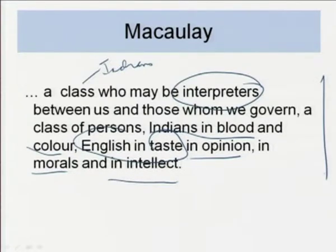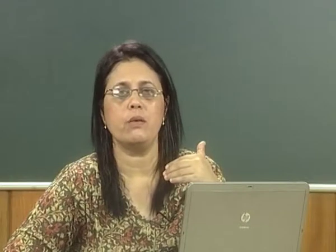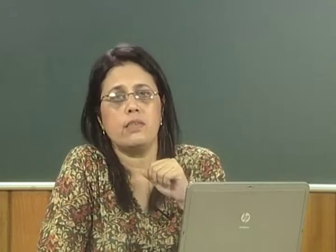It was a very clear agenda — a class would be created from educated Indians who would be the go-between, interpreters between the British government and the native Indian. Even though they were Indian in blood, they would be the 'brown sahibs,' whose intellectual and moral taste would be so formed that they are attuned to English values and English culture.